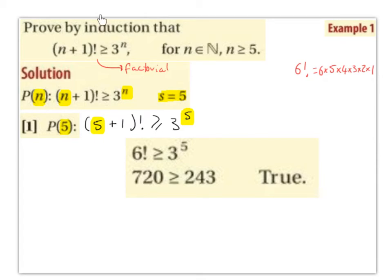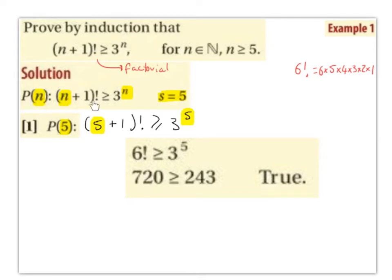Prove by induction that (n+1)! ≥ 3^n, for n ∈ ℕ where n ≥ 5. That exclamation mark means factorial — so 6! = 6×5×4×3×2×1, 7! = 7×6×5×4×3×2×1, and 4! = 4×3×2×1, working your way down to 1. So P(n) is (n+1)! ≥ 3^n, where s = 5, since n ≥ 5.